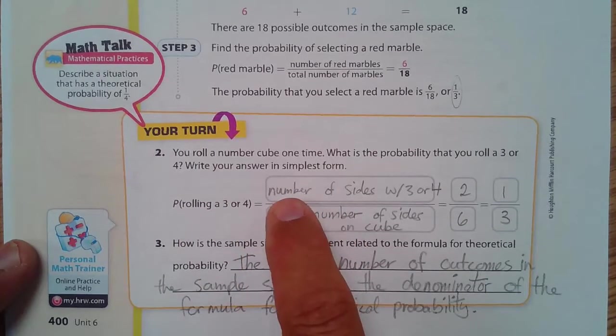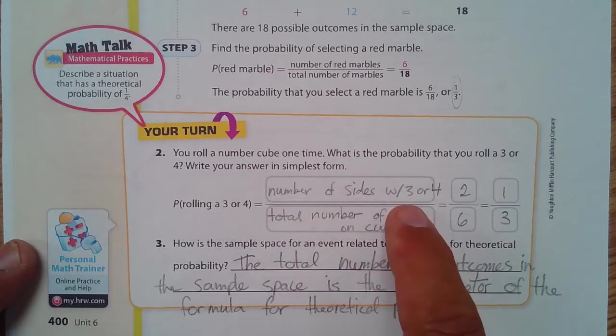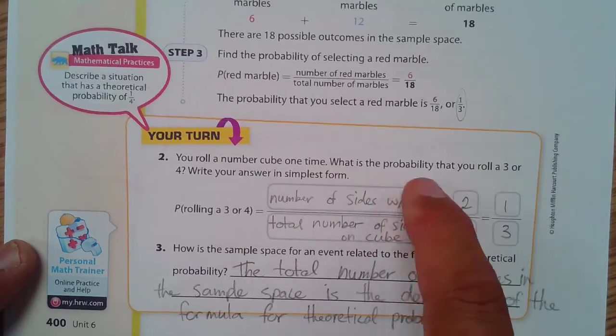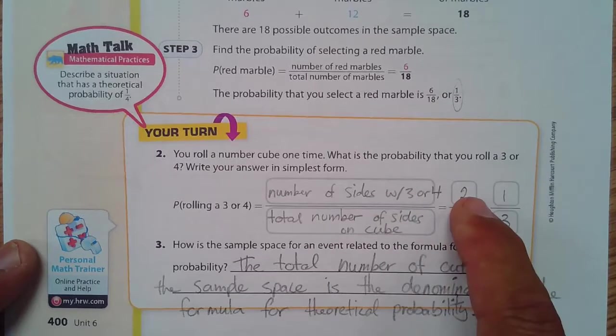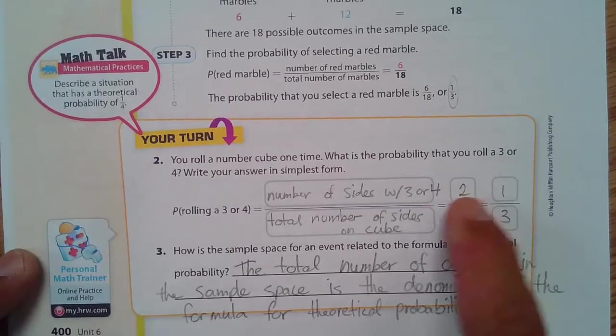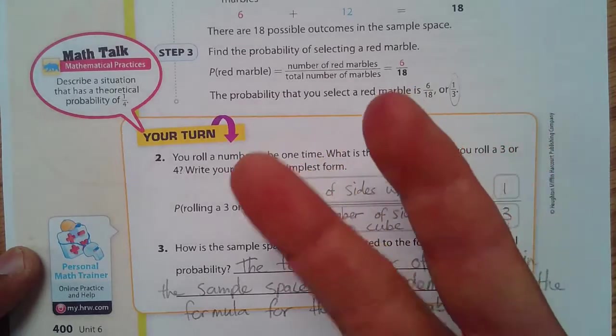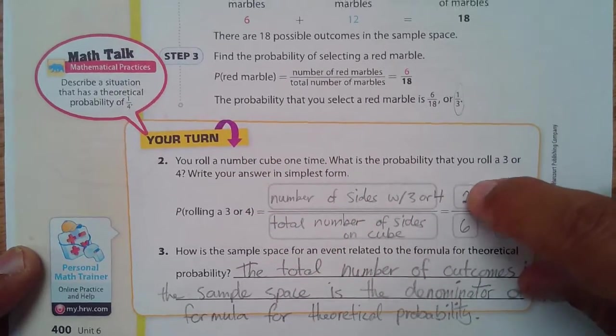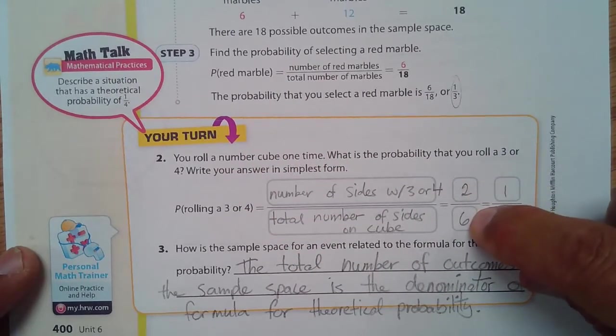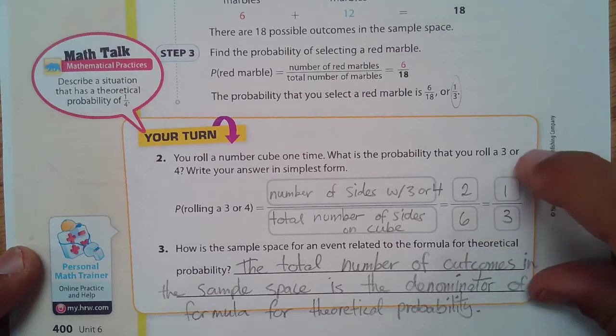So, the probability of rolling a 3 or 4. Well, on the top, it's the number of sides with, that's W and a slash, means with a 3 or 4. I had to squeeze it in there. Divided by the total number of sides on the cube. Well, there's a 3 and a 4, so that's two options here. So, there's the 2 out of total sides in the number cube of 6, and that simplifies to 1 third.